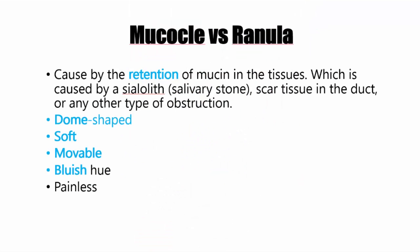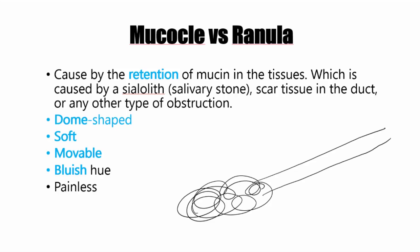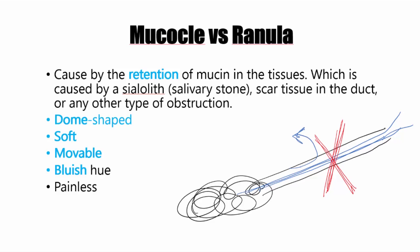Mucocele versus ranula. Mucocele and ranula are similar, first of all, because they have the same origin. They are caused because there's a gland and there's a duct, and the saliva is supposed to flow through the opening outside. But if something happens and the duct gets blocked — because of a stone or many other reasons — the saliva has nowhere to go but to flow outside. Because of this flowing of the mucin into the surrounding tissue, you will see a dome-shaped swelling, which will be soft and also movable because there's not really anything solid inside.